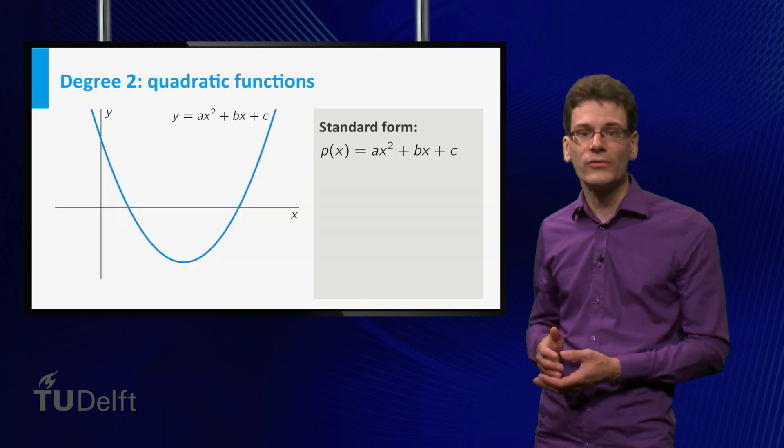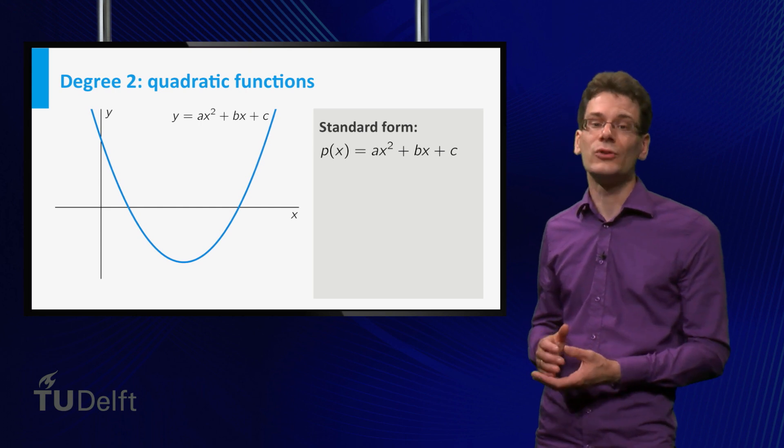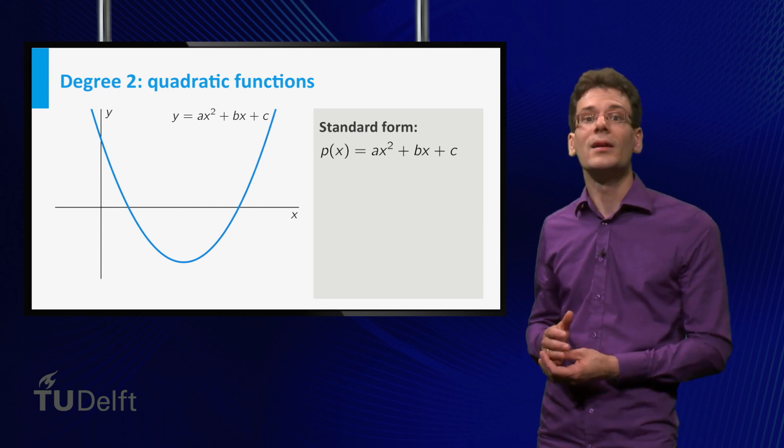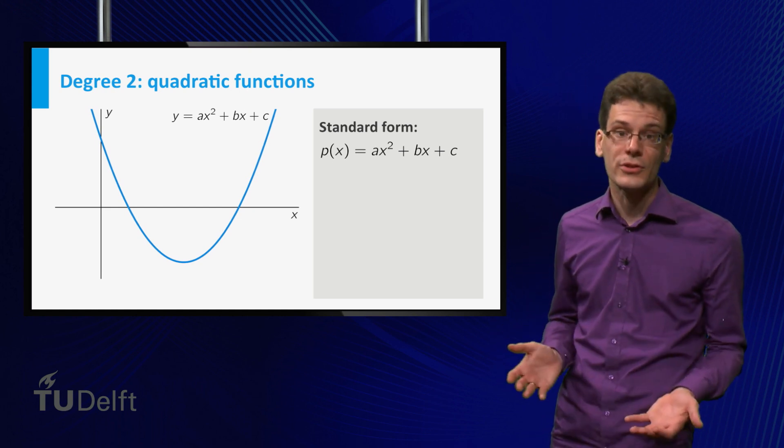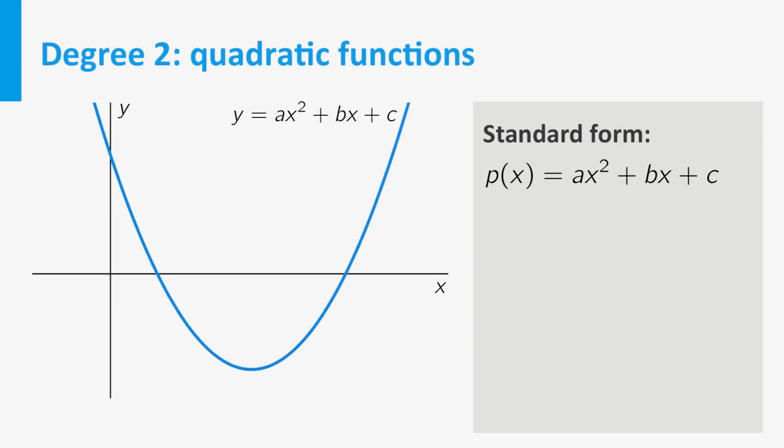The standard form of a quadratic function is p(x) equal to a times x squared plus bx plus c, where a, b and c are constants. Let's have a look at the graph of such functions. The shape of the graph of any quadratic function is a parabola. It has precisely one extremum, called the vertex, and it is symmetric in the vertical line through this vertex.